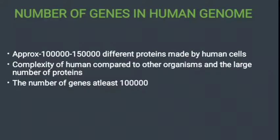Next we see the number of genes in the human genome. Human cells make approximately 100,000 to 150,000 different proteins, reflecting the complexity of humans compared to other organisms. The number of genes is at least 100,000.